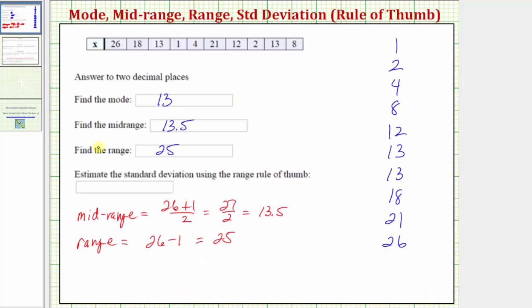And since we already know the range is equal to 25, the estimate of the standard deviation using the range rule of thumb is going to be the range of 25 divided by 4 which is equal to 6.25. I hope you found this helpful.